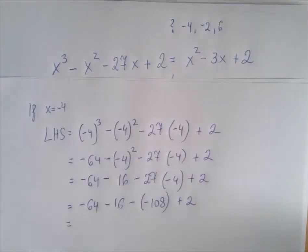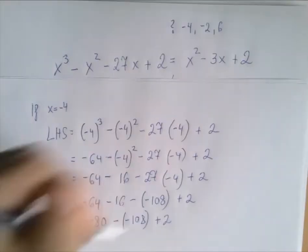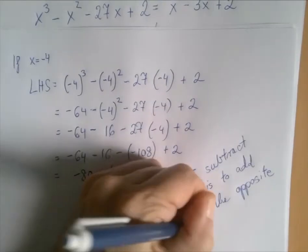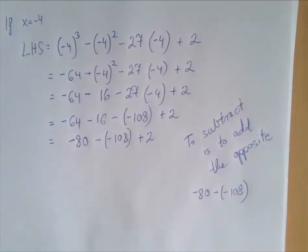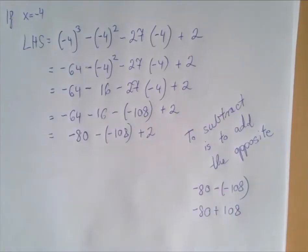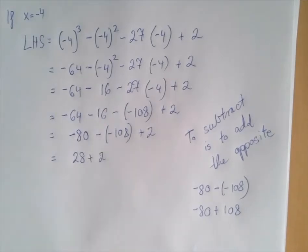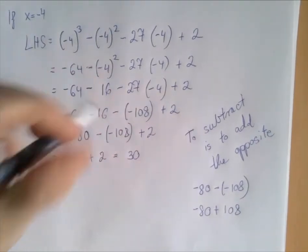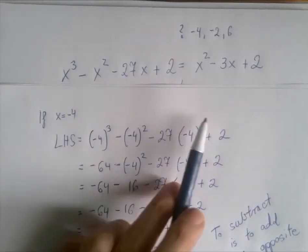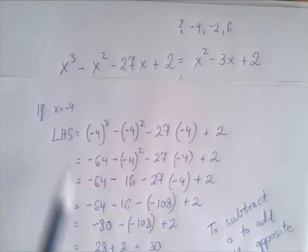And now all we are left with is addition and subtraction. They're equally strong, so we're going to go left to right. Negative 64 minus 16 is negative 80. To subtract is to add the opposite. So negative 80 minus negative 108 is negative 80 plus positive 108. And that's just 108 minus 80, that is 28. And so finally the last addition gives us 30. So when x is negative 4, the left-hand side is 30.